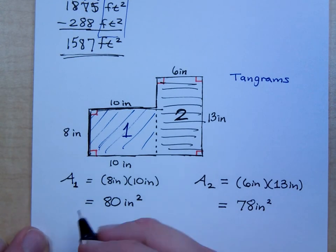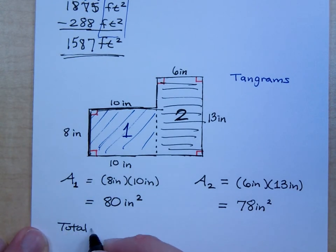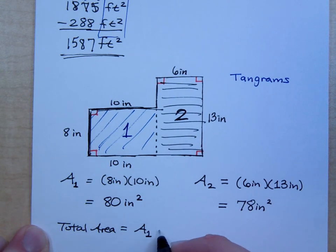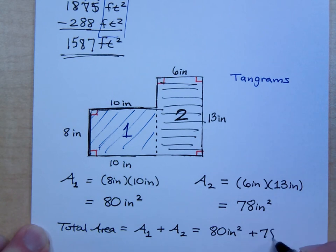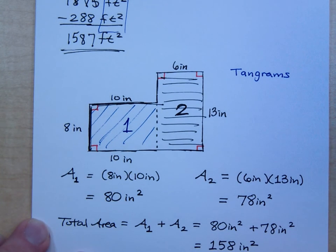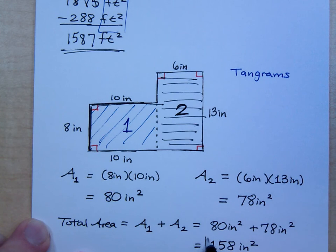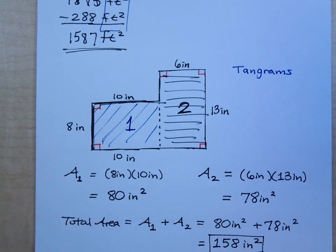So your total area will be the area of the first piece plus the area of the second piece. And what do we come up with for that? How do we say it correctly? Square inches. Right, so 80 square inches plus 78 square inches gives us 158 square inches. Do you all agree with that?